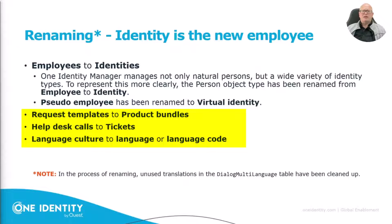Additionally, there were some other renamings. Request templates are now named product bundles, which makes more sense for the IT shop. Help desk tickets are now simply called tickets — help desk calls was the old name. There is also a renaming of language culture to language or language codes, though very few people will have encountered those translations in the past. With these renamings, things are much easier to understand.